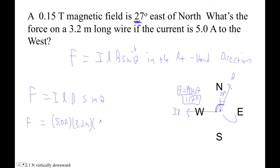And then, the magnetic field is 0.15 Teslas. And then we go sine of 117 degrees, right?